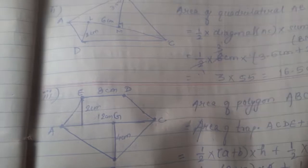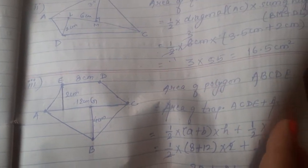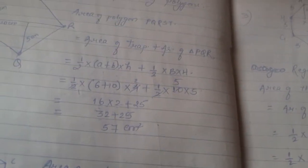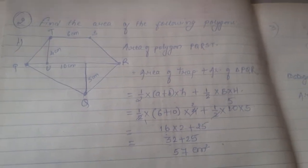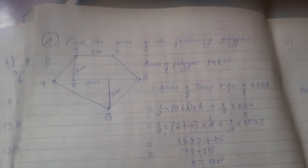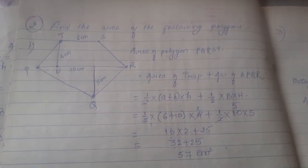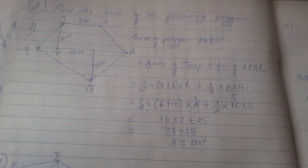When you have a polygon or quadrilateral given, we divide it into triangles, trapeziums, rectangles, or squares — whatever shapes appear within the figure.